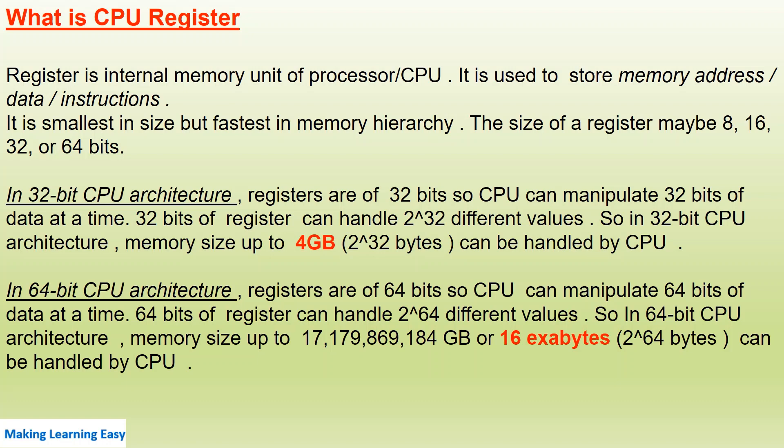In a 64-bit CPU architecture, registers are 64 bits, so the CPU can manipulate 64 bits of data at a time. 64-bit registers can handle 2 to the power of 64 different values, so memory size up to 16 exabytes can be handled by the CPU. Please pay attention to these architecture details — they will help you understand 32-bit vs 64-bit CPU architecture.